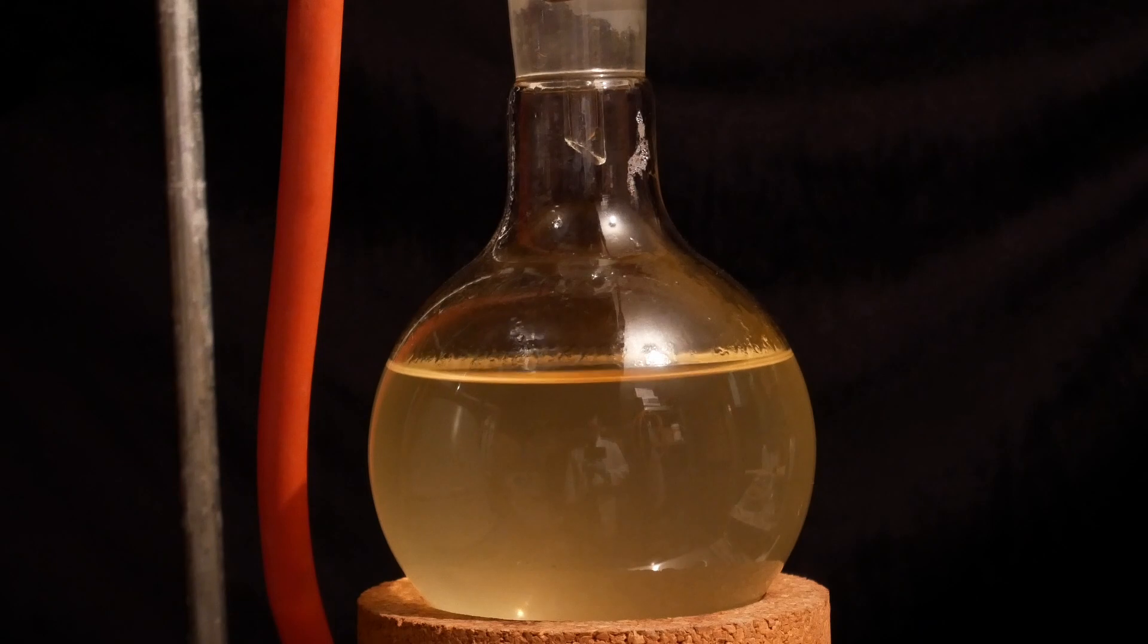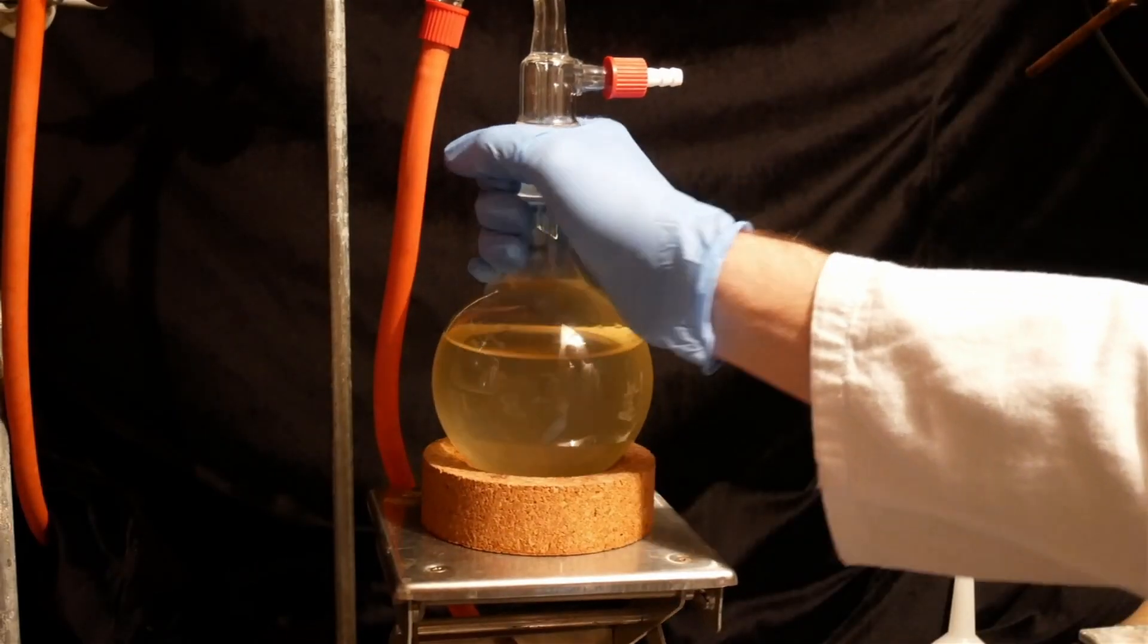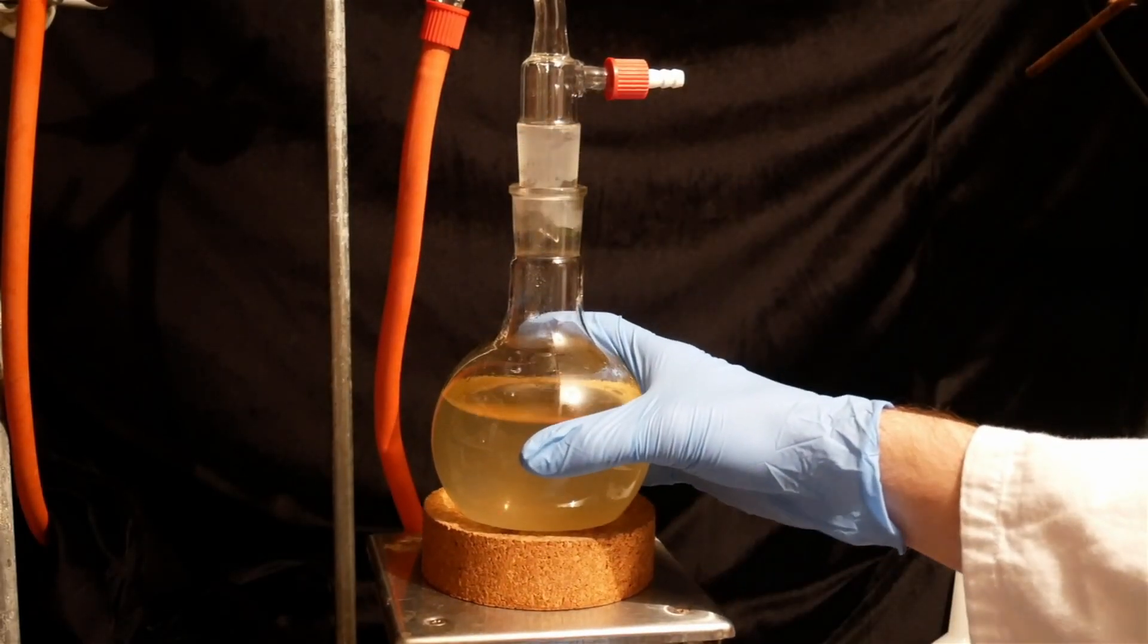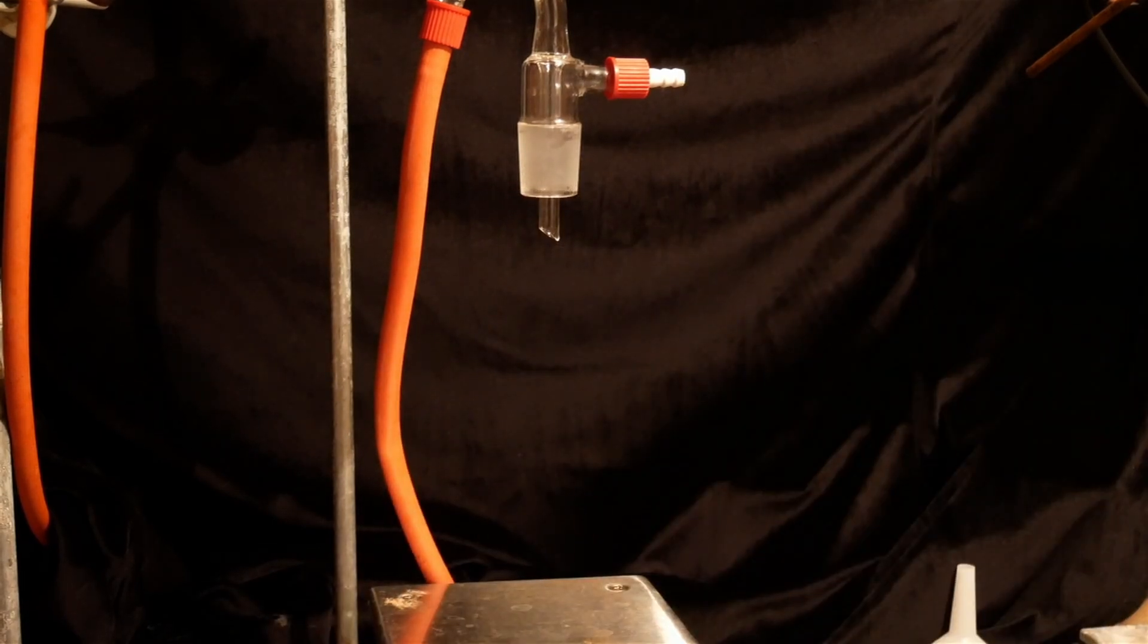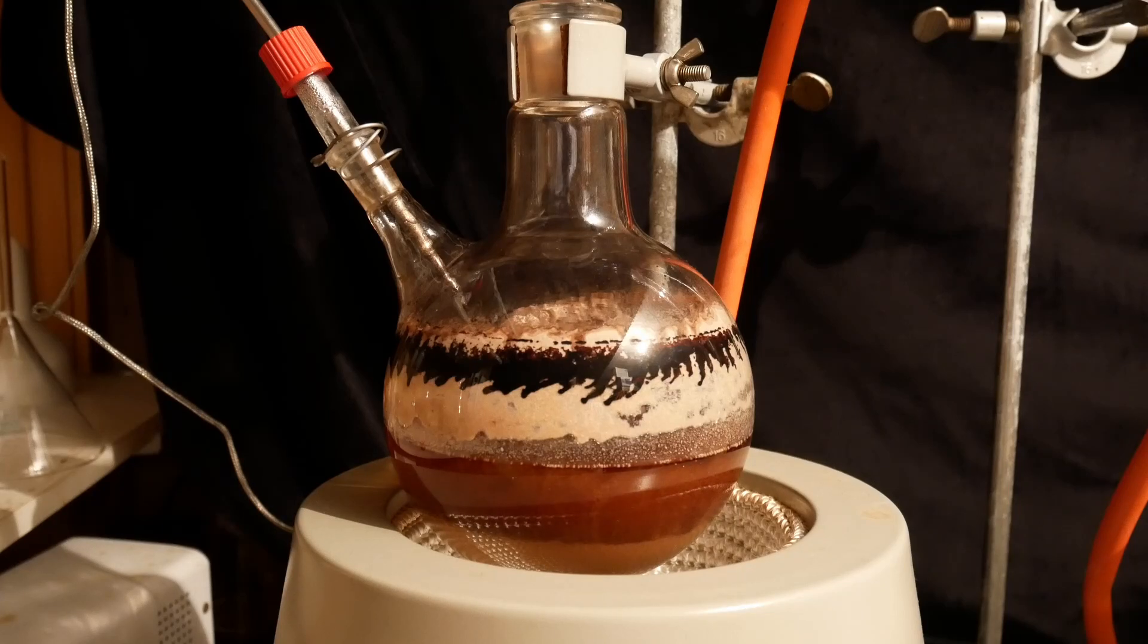To ensure all of the aniline comes over, about 400 milliliters of distillate are collected. There's some water and solid residue left in the flask, which have formed some nice patterns on the glass wall.